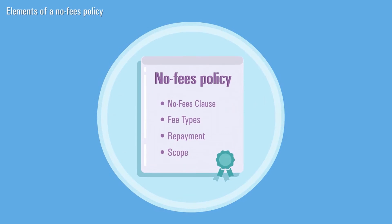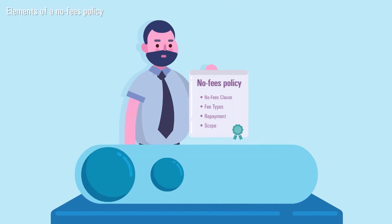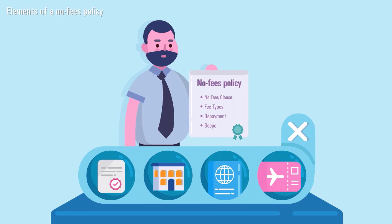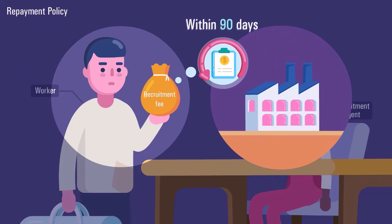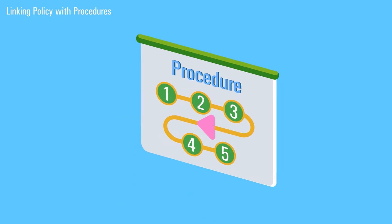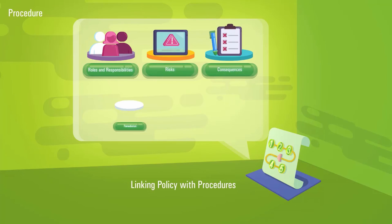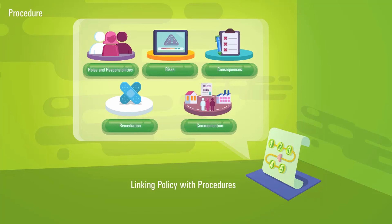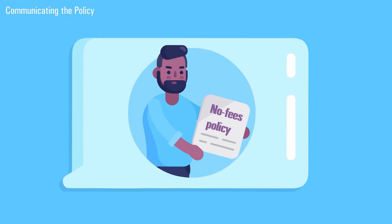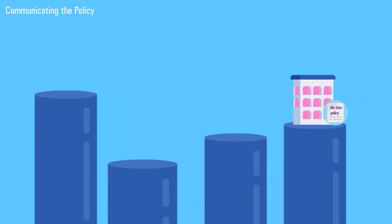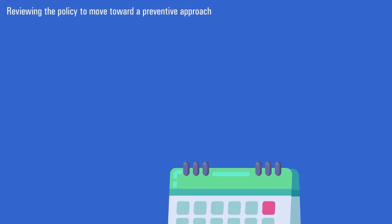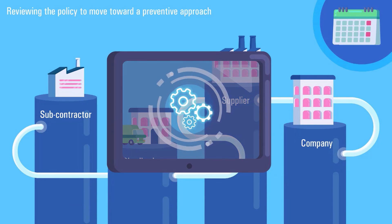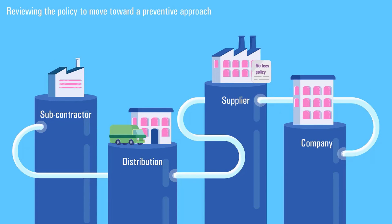Let's review. A no-fees policy establishes a commitment from the top to prevent recruitment fees from being charged to workers. If fees were charged, the policy states that they must be paid back no later than 90 days after discovery. The policy is linked with procedures laying out who is responsible, how to mitigate risks, and what to do if any issues are discovered. Communicate the policy and procedures internally and throughout your supply chain, holding your suppliers accountable through their contracts. Review the policy regularly to move toward a preventive approach, working with your direct suppliers to implement your no-fees policy in their own supply chains.